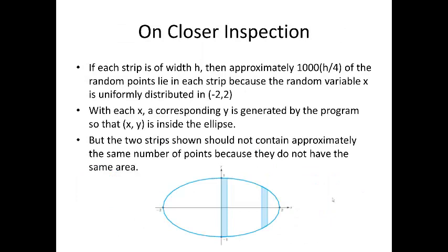To be convinced of the fact that it's a bit erroneous, we consider two vertical strips taken inside the ellipse. The points generated by the second program tend to be clustered at the left and the right extremities of the ellipse in the figure. But if each strip is a width of H, then approximately 1000 times H divided by 4 of the random points lie in each strip because the random variable X is uniformly distributed in minus 2 to 2.